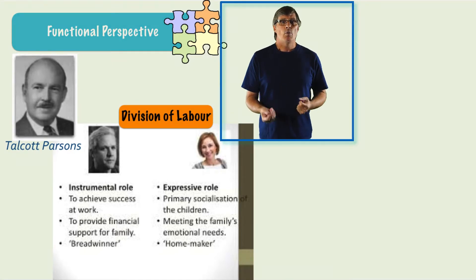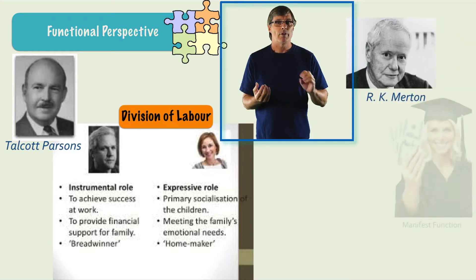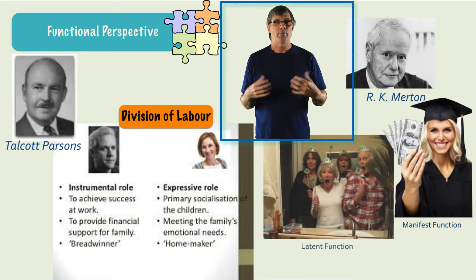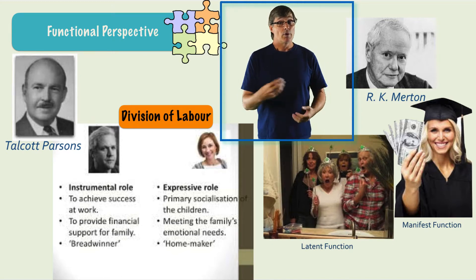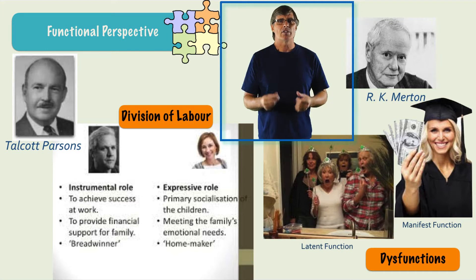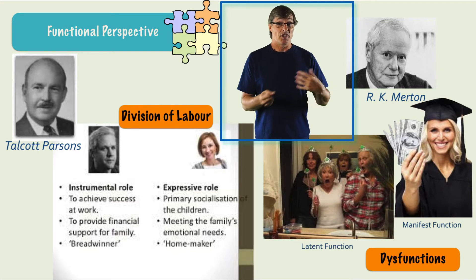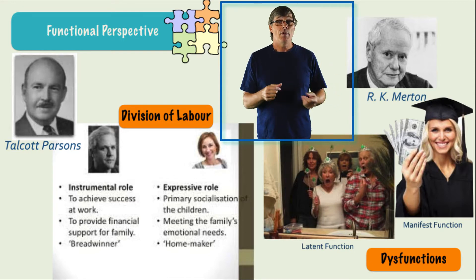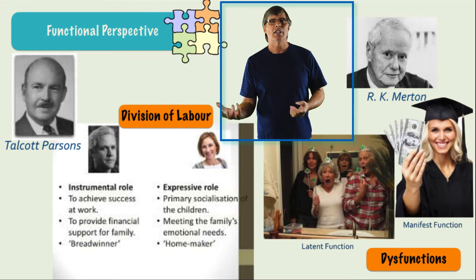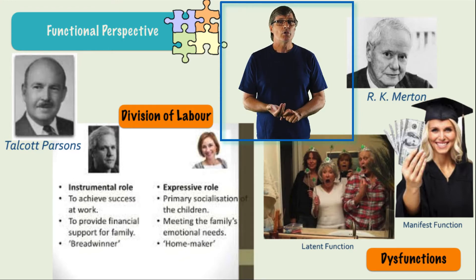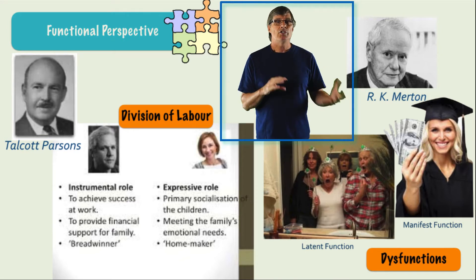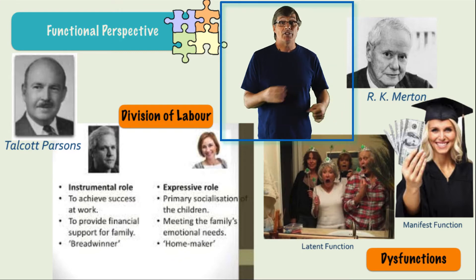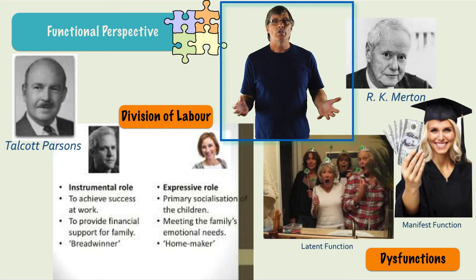R.K. Merton described manifest functions — functions that are intended or overtly recognized by the participants in a social setting. Latent functions are unintended, hidden, or remain unacknowledged by participants. Dysfunctions are undesirable consequences of any element in society. In education, for example, the manifest functions would be teaching skills and broadened awareness. The latent functions would be the social networking and lifelong friendships we establish. Social institutions — family, economy, politics — provide society with both manifest and latent functions. All institutions function with manifest and latent functions and therefore provide purpose for being.